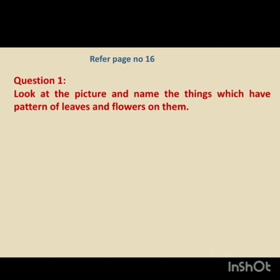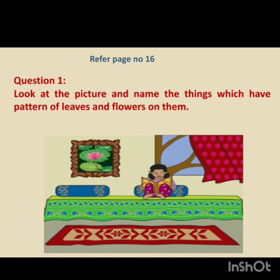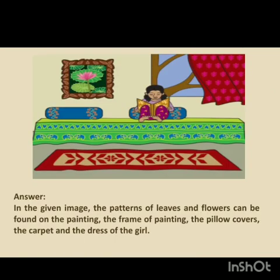Refer page number 16. Question number 1: Look at the picture and name the things which have patterns of leaves and flowers on them. Children, look at the picture very carefully and find out the things which have the patterns of leaves and flowers. In the given image, the patterns of leaves and flowers can be found on the painting, the frame of the painting, the pillow covers, the carpet and the dress of the girl. These are the things which have patterns of leaves and flowers.